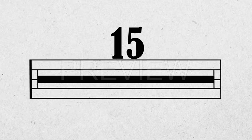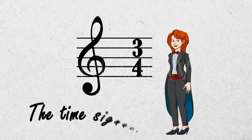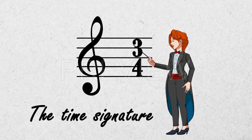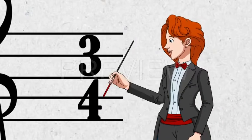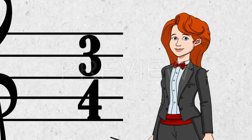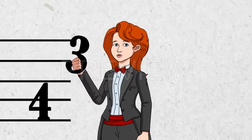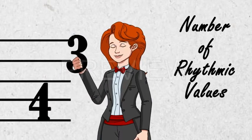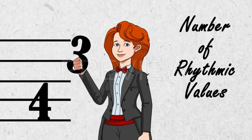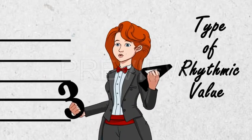The meter also dictates the way in which the note values are grouped within each bar. The time signature is placed at the beginning of a work and consists of two numbers, set out similar to a fraction, except that there is no line in between them. The top number refers to the number of rhythmic values needed to complete a bar, and the bottom number refers to the type of rhythmic value that is required.